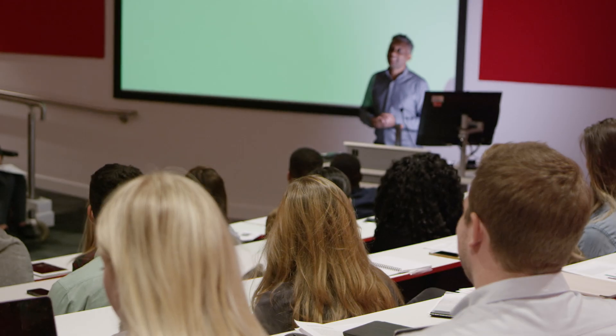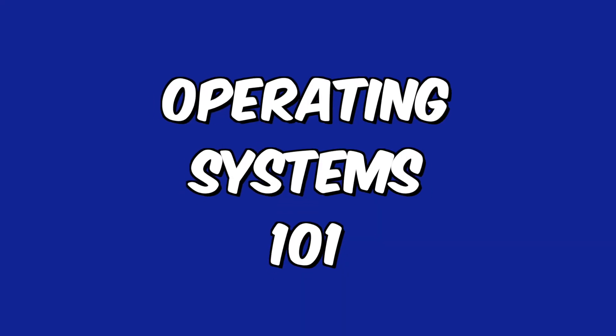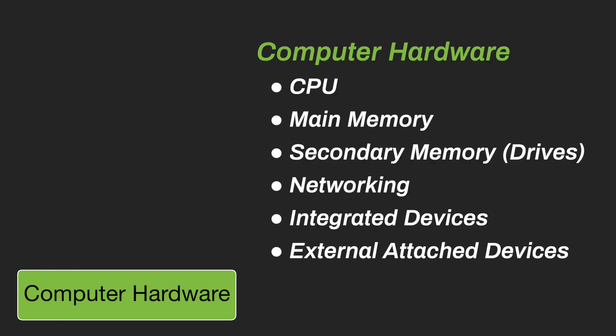Let's dust off the old computer science degree and take a look at operating systems 101. We think about this as a stack. At the bottom is the computer hardware: the CPU, main memory, secondary memory like SD cards and drives. There's also networking hardware, internal devices that control I/O, and various external attached devices like the keyboard, mouse, and cameras. Here, we're most interested in the CPU, main and secondary memory, and networking.